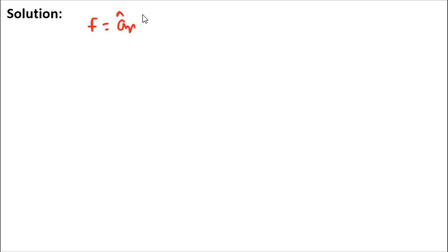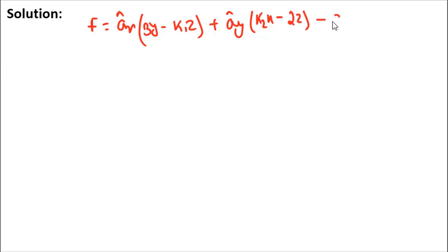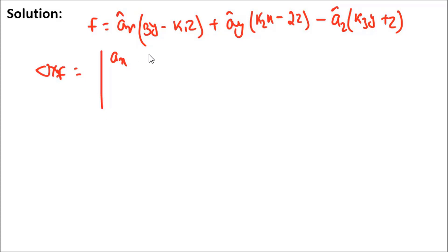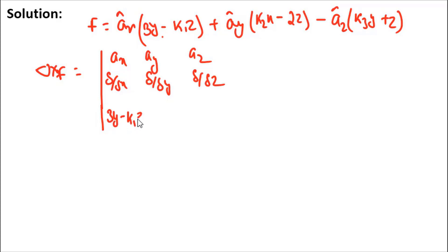In the question, F is given as ax(3y − k1·z) + ay(k2·x − 2z) − az(k3·y + z). You can write del cross F as the determinant [ax, ay, az; ∂/∂x, ∂/∂y, ∂/∂z; F(x), F(y), F(z)], where F(x) = 3y − k1·z, F(y) = k2·x − 2z, and F(z) = −(k3·y + z).